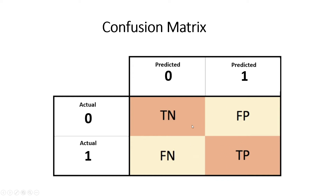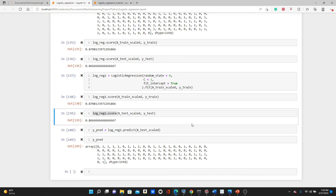This matrix is called the confusion matrix. In the scikit-learn library we have a method called confusion matrix — you can use that and you will get all four values easily.